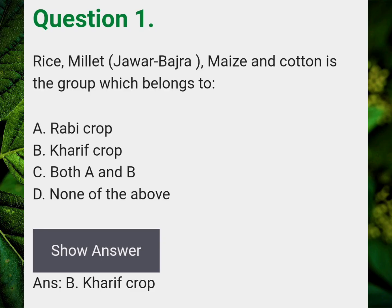Rice, Millat, Jawar, Bajra, Maize & Cotton is a group which belongs to? Answer B: Kharif Crop.